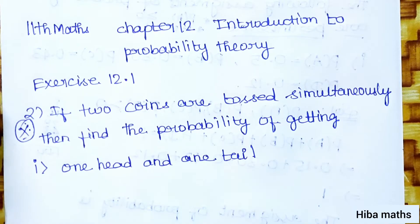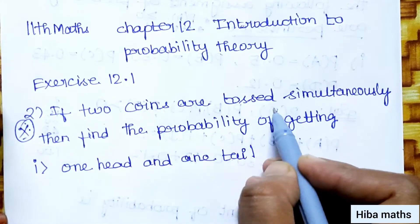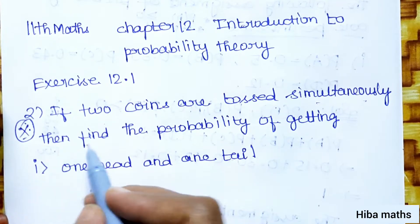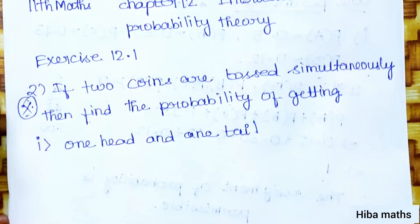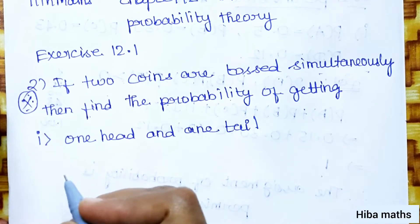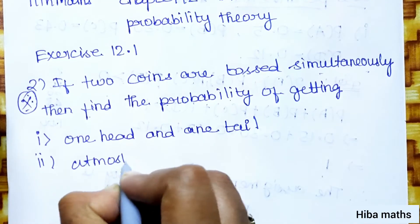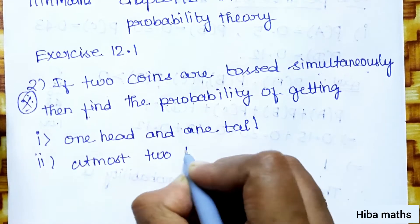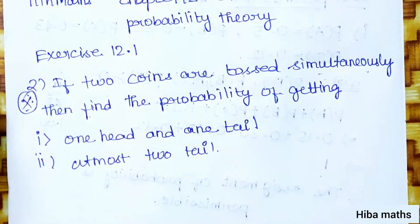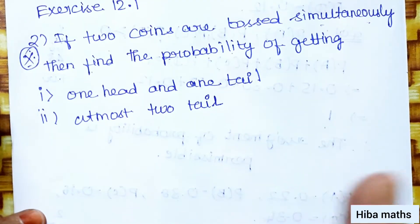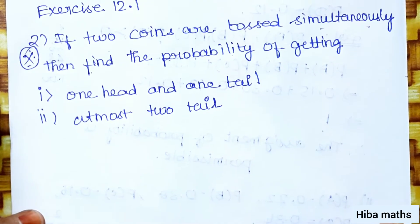Hello students, welcome to Heba Max 11th standard Mathematics, Chapter 12: Introduction to Probability Theory. Exercise 12.1, second sum. If two coins are tossed simultaneously, find the probability of getting one head and one tail. In one subdivision we have at most two tails, and in the repeated question we have at least two coins tossed simultaneously.